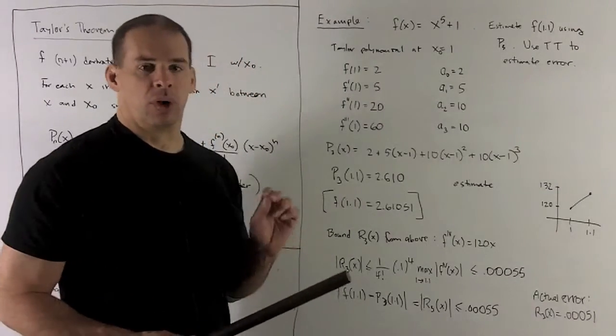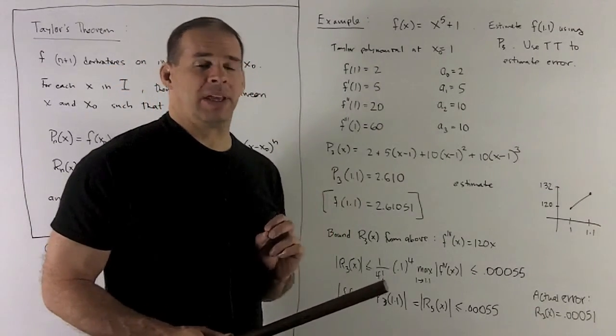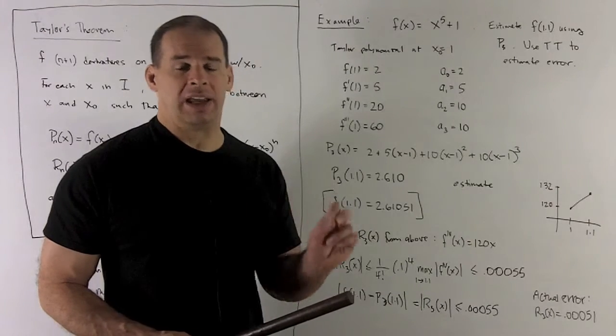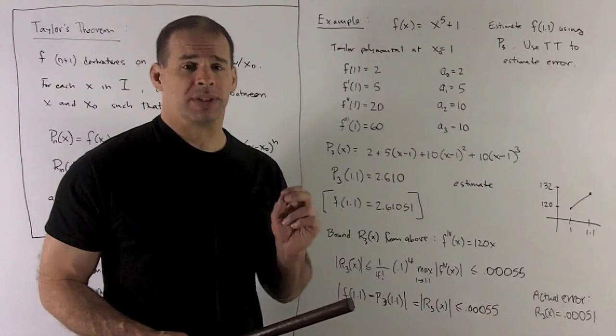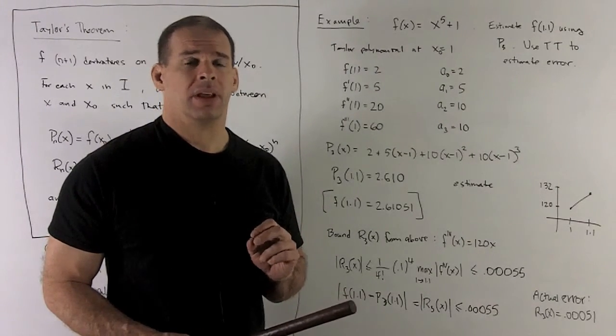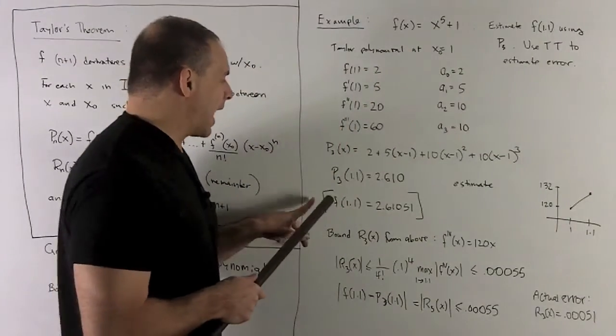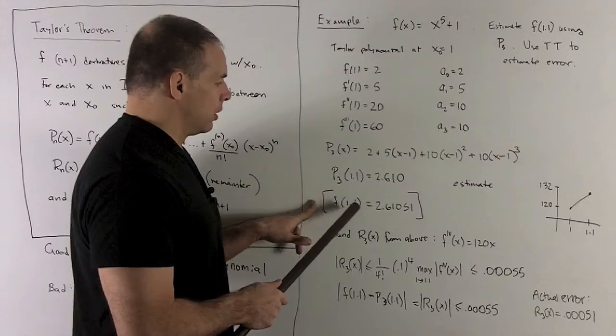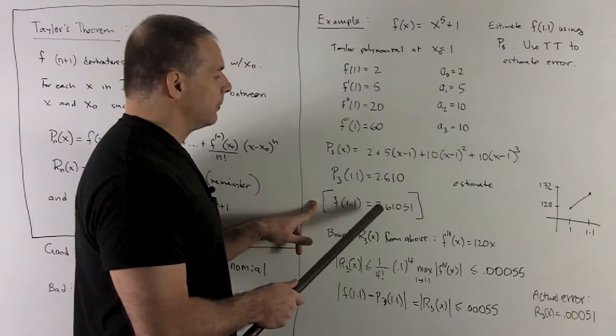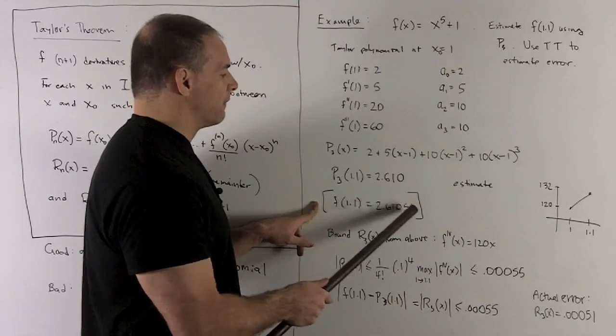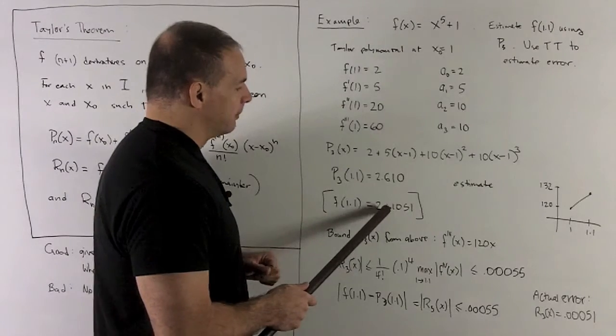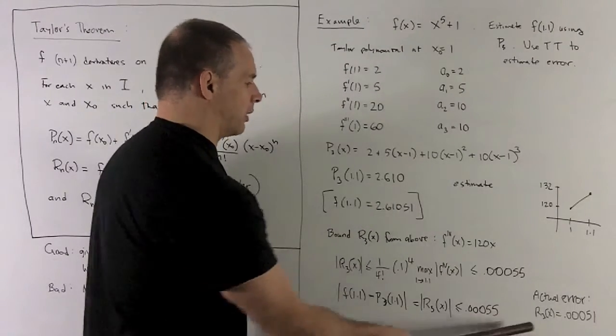In the real world, you may not be able to get the actual number. So, you're going to need to know the error. And that's where Taylor's theorem is going to come in. Now, since I can work out x⁵ + 1, the actual error is going to be f(1.1). And then, we get 2.61051. So, your error is going to be 0.00051.